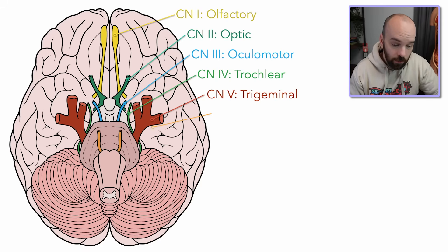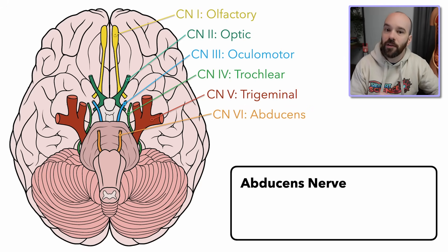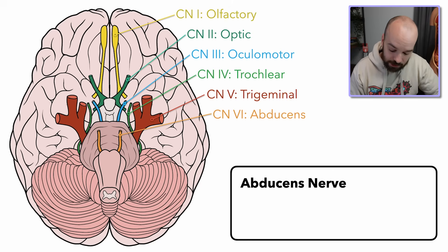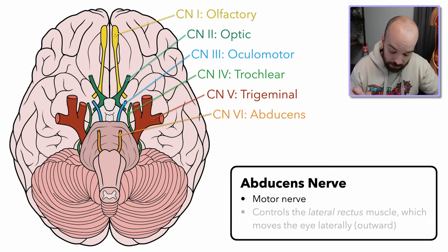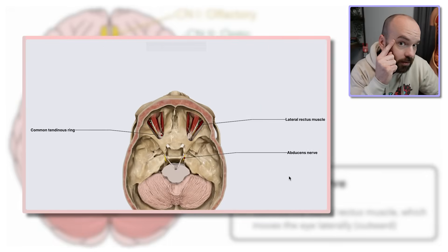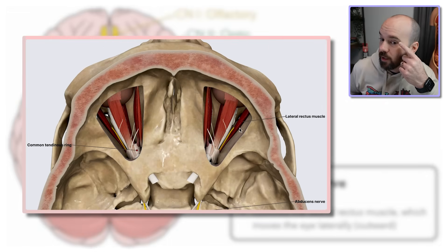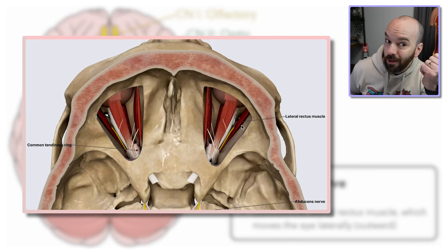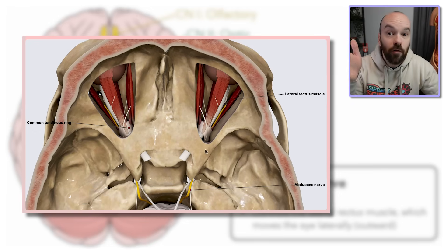After the trigeminal nerve, we have nerve number six — the abducens nerve. This is the other nerve that's going to control eye movements. It's a motor nerve, specifically controlling the lateral rectus muscle — a muscle on the side of the eye that turns the eye outward. The right lateral rectus will abduct the right eye, and the left lateral rectus will abduct the left eye. That word abducens has the same root as abduct, meaning to move away from the body.